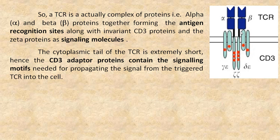The cytoplasmic tail of the T cell receptor is extremely short. Hence, the CD3 adapter proteins contain the signaling motifs needed for propagating the signal from the triggered TCR into the cell.